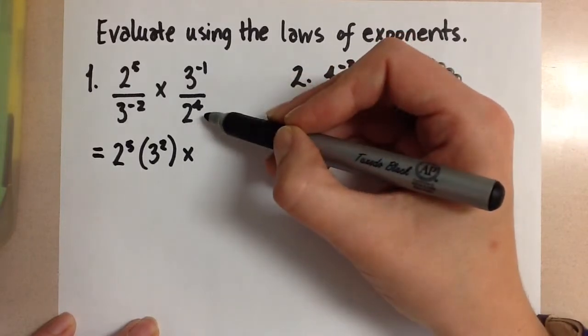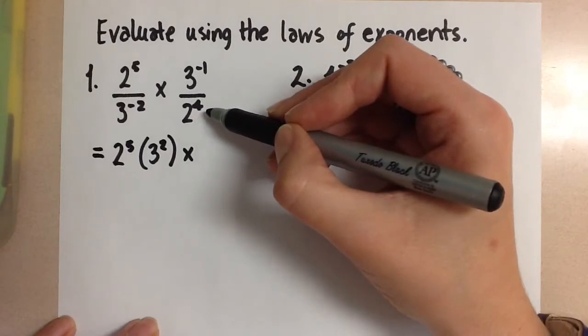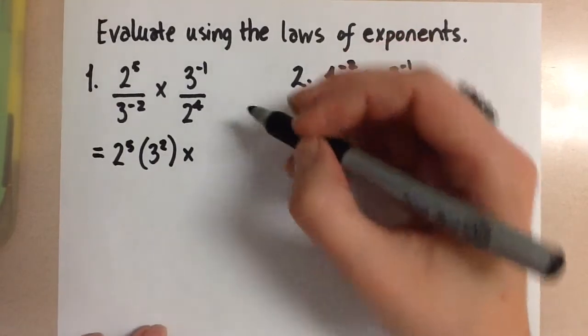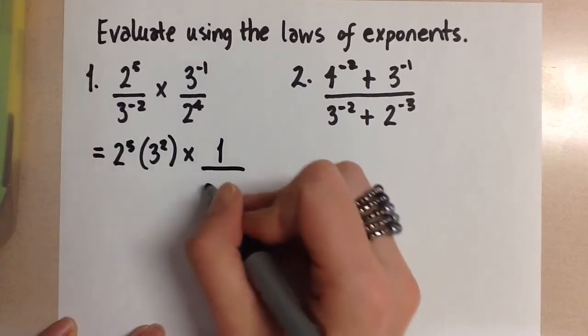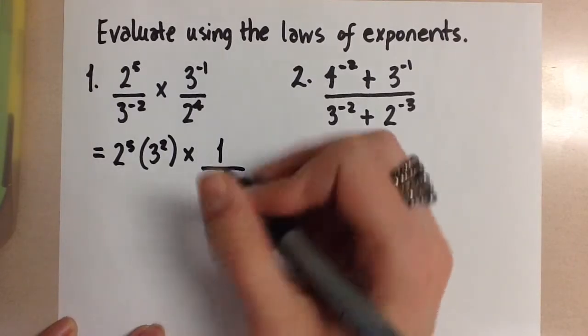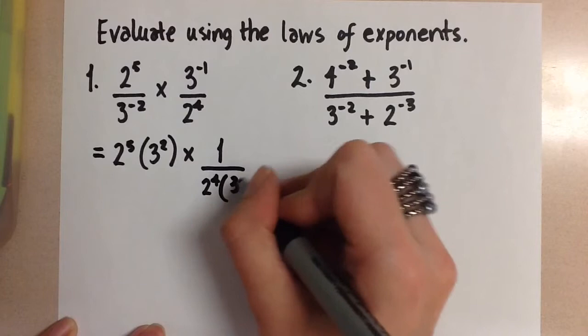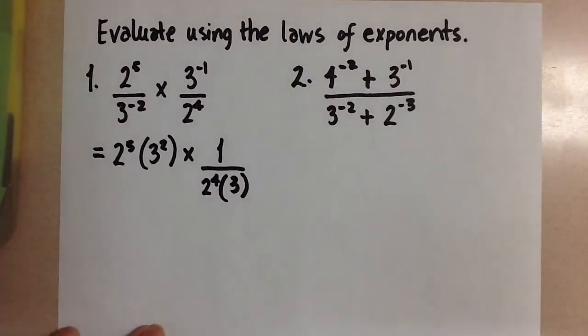Or we can move it into the denominator and that achieves the same thing as taking the reciprocal. So now this is going to be 1 over 2 to the 4 times 3 to the power of 1 which is just 3.